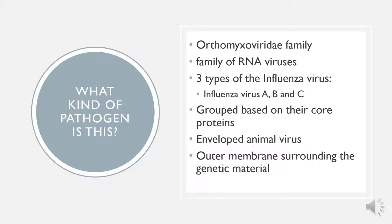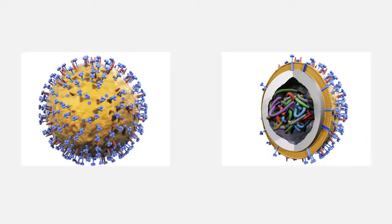It is an enveloped animal virus with an outer membrane surrounding the genetic material. Here is a diagram displaying the structure of the influenza virus. You can see the core proteins being enveloped with an outer membrane surrounding the genetic material.